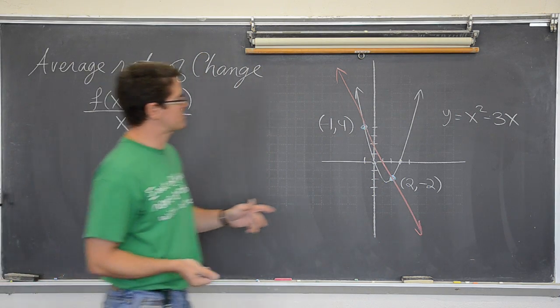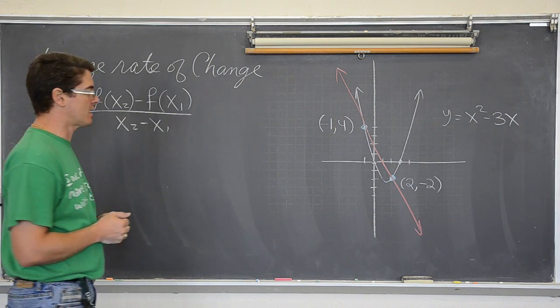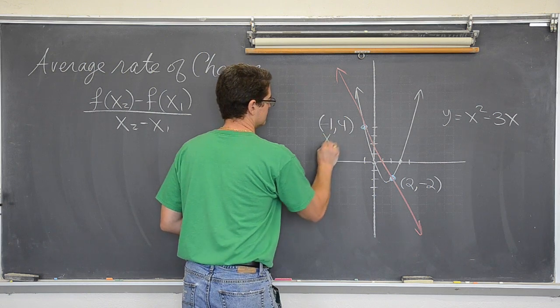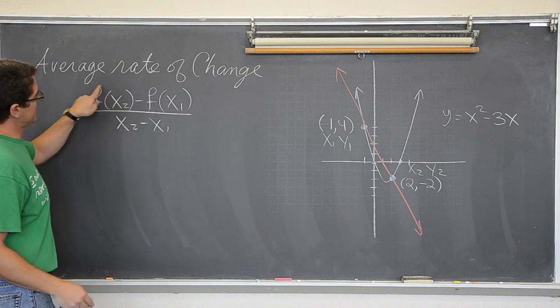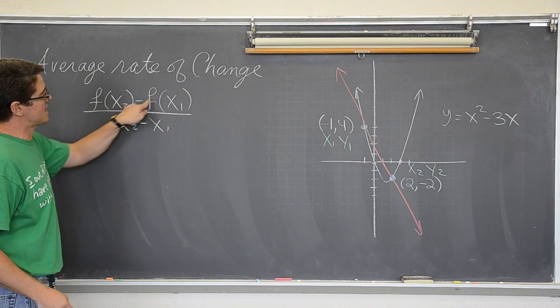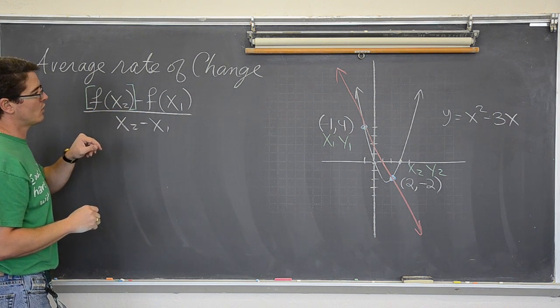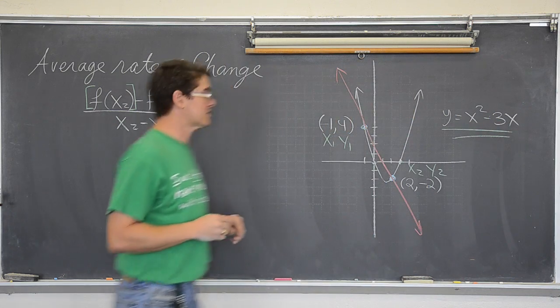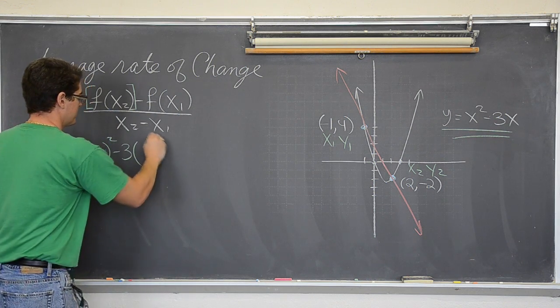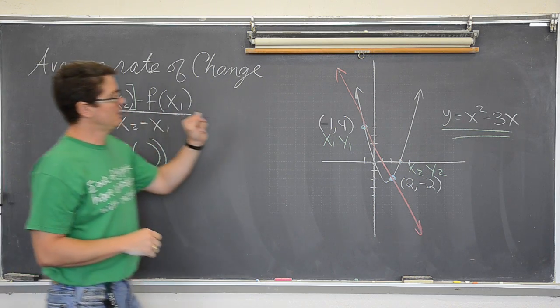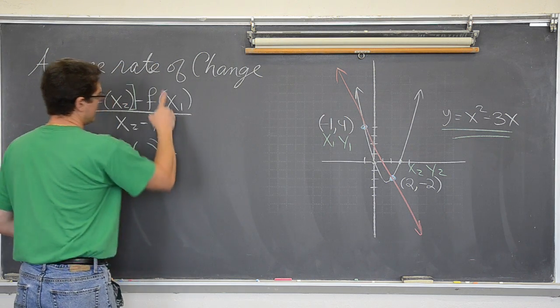For this parabola, if I want the average rate of change between negative 1,4 and 2,2 and use the function notation inside the formula, this is what it is going to look like. I am going to call this x1,y1 and this x2,y2 and apply it to this. The function is x squared minus 3x. So the function is something squared minus 3 times something. I am going to leave that blank for a second to highlight that the x in the function is just an empty place where we put in numbers and other variables or expressions if we even need to.